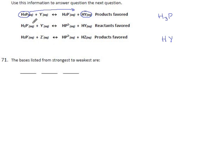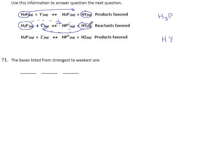For this one, our acids are H2P — I know that's an acid because it's giving away a hydrogen and turning into this — and HY, which is trying to turn back into Y- by giving away a hydrogen. The reactants are favored, meaning this reaction goes to the left, meaning HY is the stronger acid here. So HY is higher up than H2P.